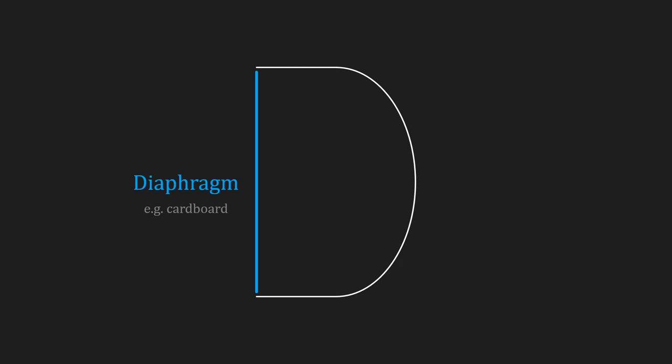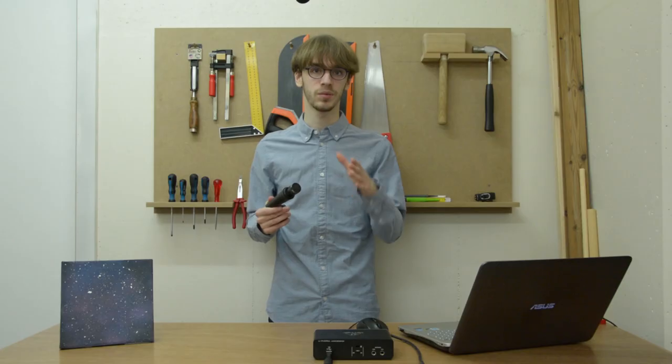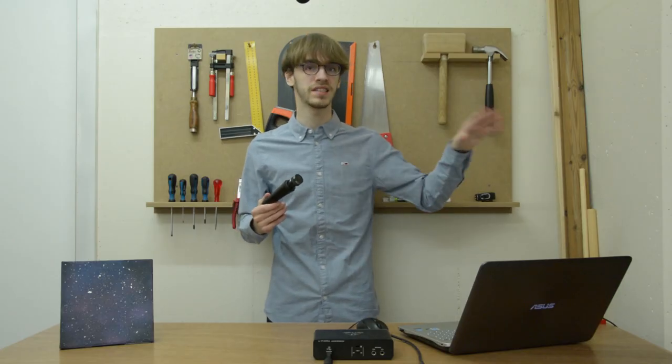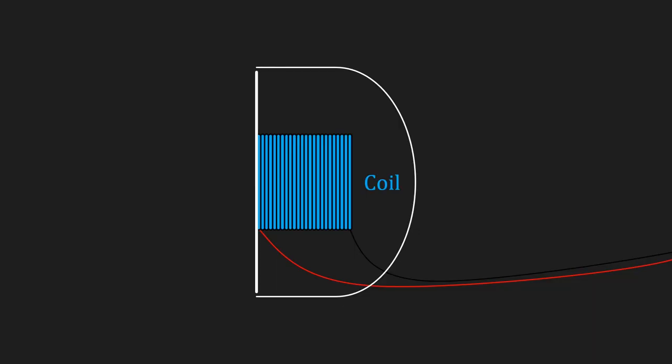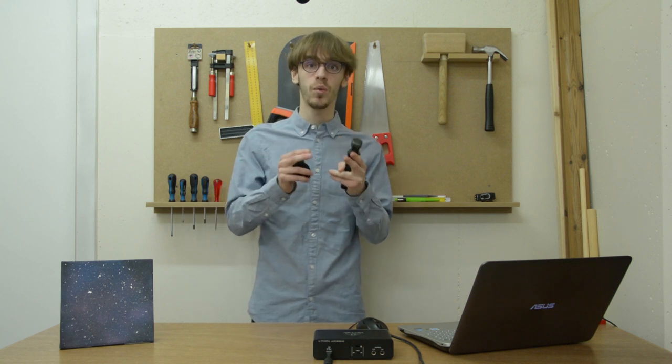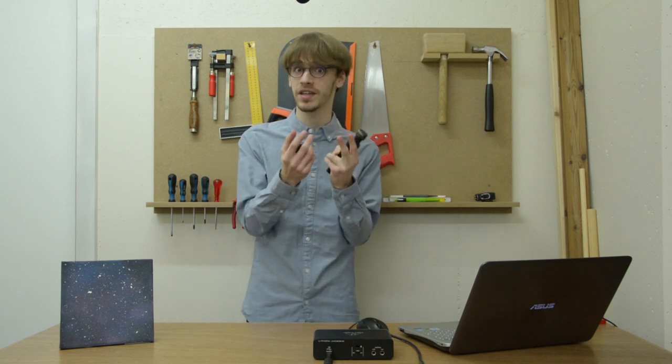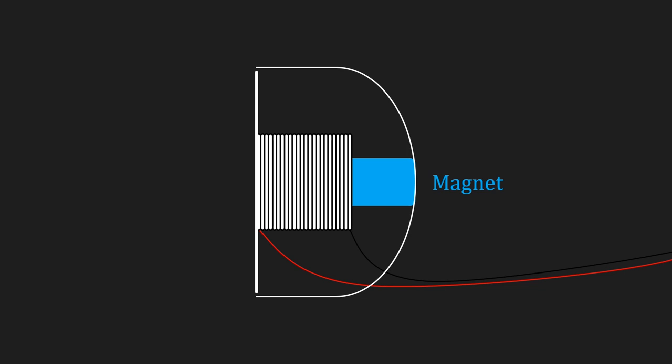And all it is, is it's usually a piece of cardboard which starts to vibrate whenever a sound wave hits it. Attached to that is a coil which is a wire that's rolled up and it will vibrate together with the cardboard since they are attached.